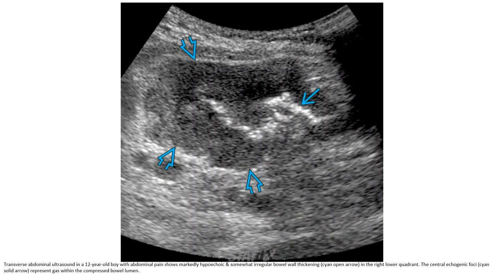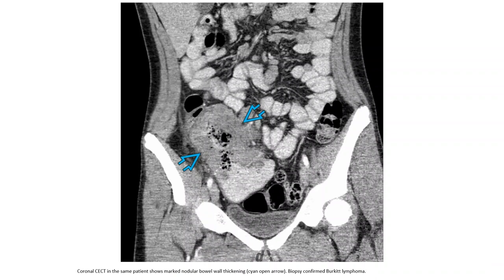This is a transverse abdominal ultrasound in a 12-year-old patient, showing markedly hypoechoic and somewhat echogenic bowel wall thickening in the right lower quadrant. The central hypoechoic area represents gas within the compressed bowel lumen. Contrast-enhanced CT in the same patient shows markedly nodular bowel wall thickening, biopsy-confirmed Burkitt lymphoma.